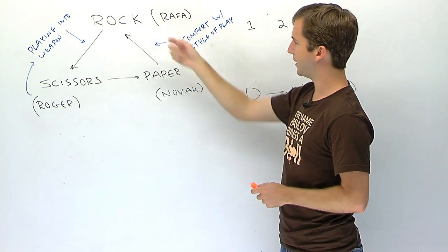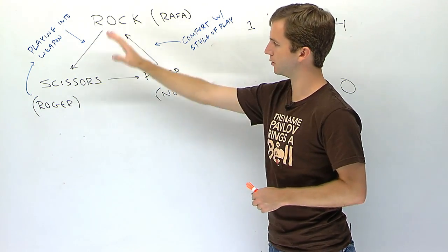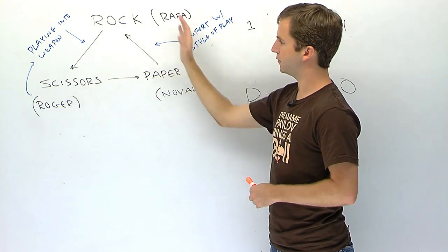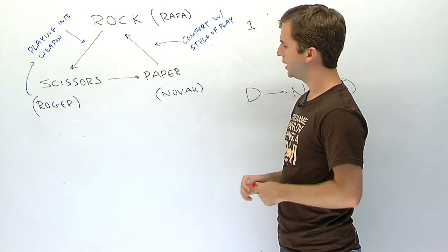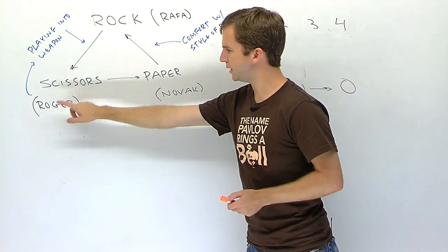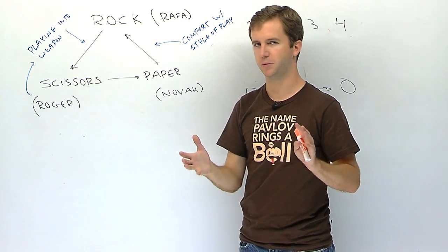Now why is Novak paper? I don't know, I got to make this analogy work. So Novak, you are paper. And of course paper beats rock. Novak has gotten the best of Rafa the last couple times they've played. So I think this is a pretty good kind of analogy I guess you could say for the men's game.